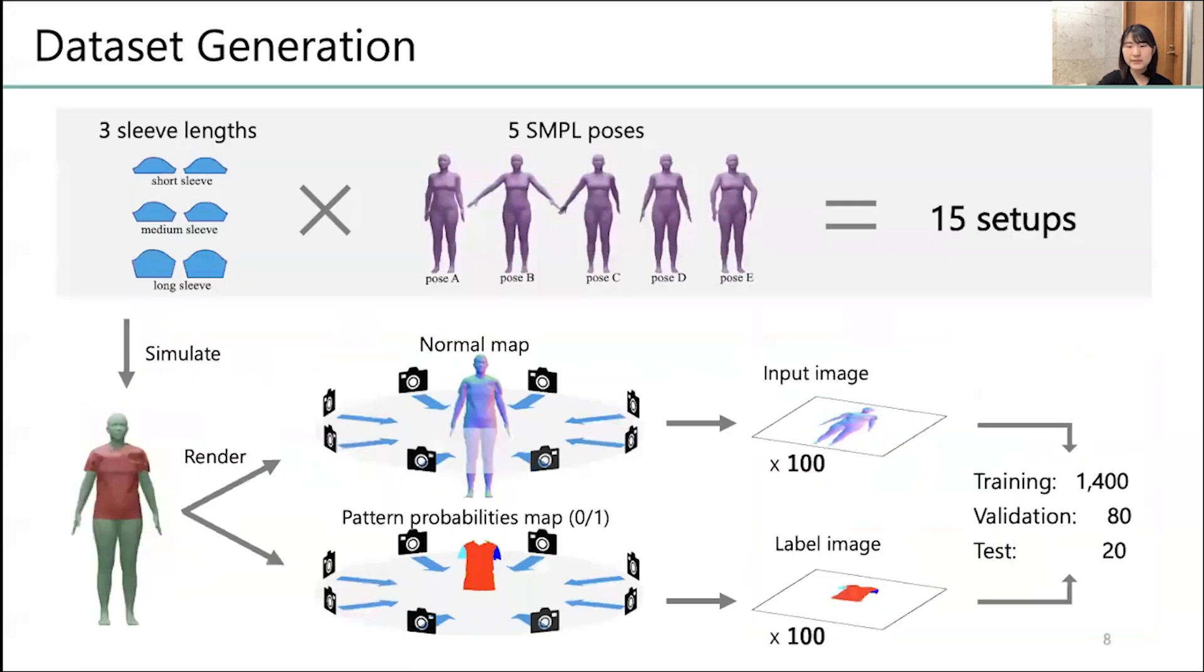To increase variation in the dataset, we prepared 3 different sleeve-length patterns and 5 different SMPL models to run garment simulations for each of them. Therefore, the total number of data type was 15. After simulating each data type, we rendered them in normal and pattern maps, and took 100 images of each.